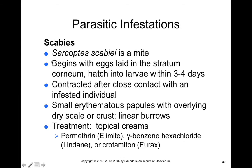Next we'll talk about parasitic infestations. Scabies is caused by Sarcoptes scabiei — it's a mite. The mite lays eggs in the stratum corneum, those hatch into larvae within several days, and those larvae remain within the skin where they feed on dead skin cells. It's contracted after close contact with an infested individual, and you get small erythematous papules with overlying dry scaly crust. Fortunately, it's treatable with topical creams like permethrin cream, gamma benzene hexachloride, or crotamiton — these essentially target the mite.